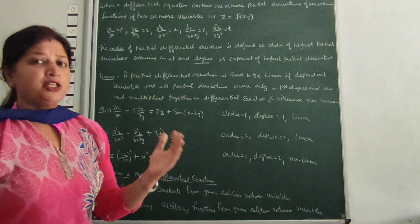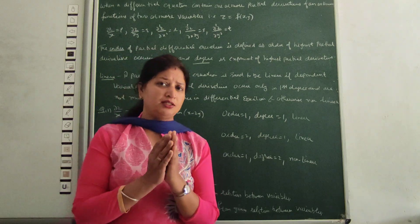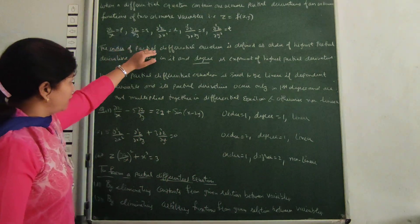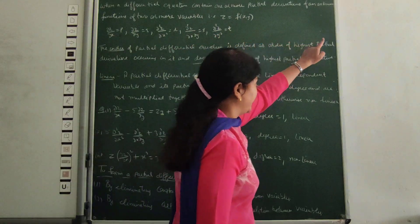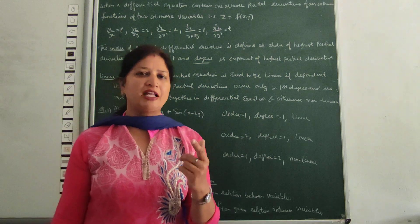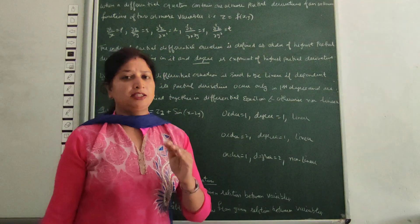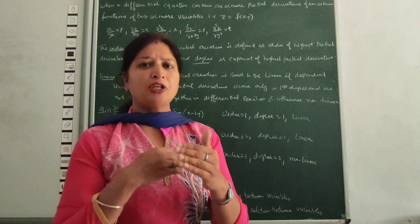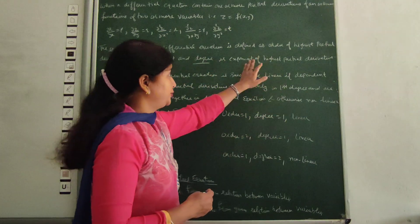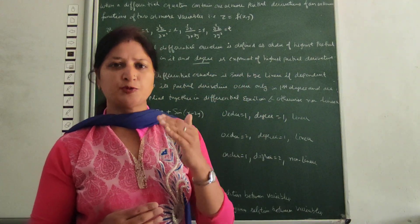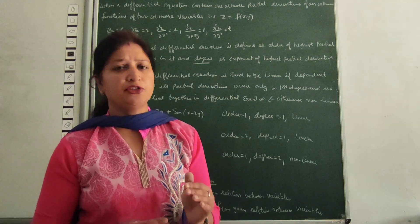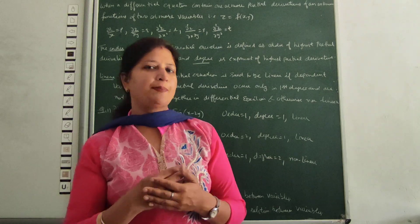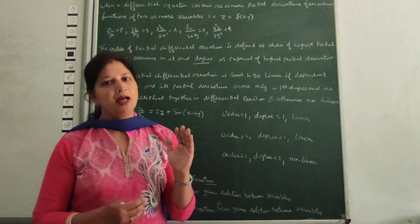Next is order — what happens? The order of a partial differential equation is defined as the order of the highest partial derivative in the equation. So for finding the order, we have to check the highest derivative, which is a partial derivative. That is the order of a partial differential equation.